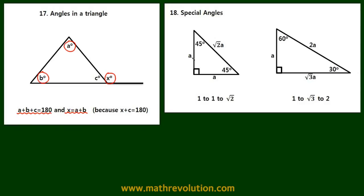Second, in a special angle triangle where the other angles are 45 degrees, the ratio of the sides is 1 to 1 to square root 2. And in this case the ratio is 1 to square root 3 to 2.